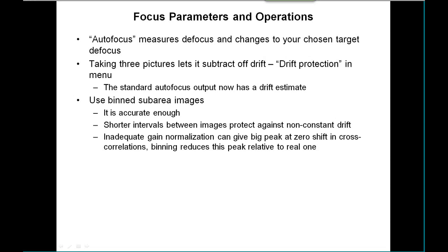The amount of shift tells us how far away the specimen is from the focal point. The auto-focus button or the option in the Focus menu measures the defocus with this method and then changes to the target defocus — the number you've chosen. You'll see it take three pictures unless you've turned off the drift protection option, because it protects against drift by measuring the drift from the shift between each pair of pictures and subtracting that off. There's also a nice estimate of the drift in nanometers per second any time you auto-focus.